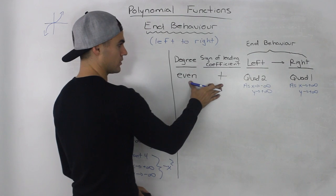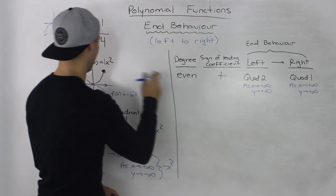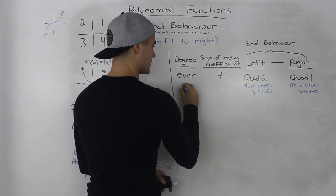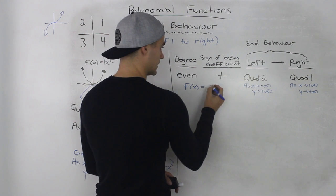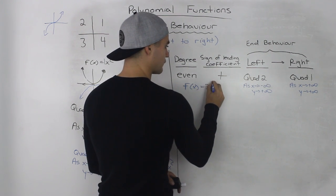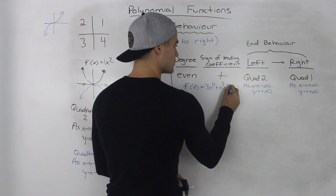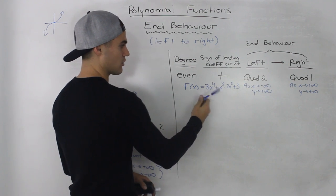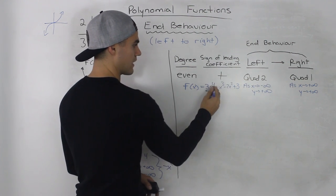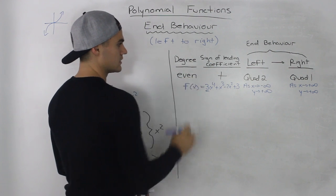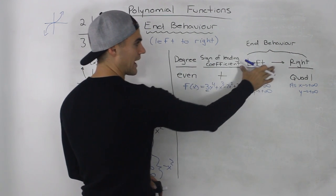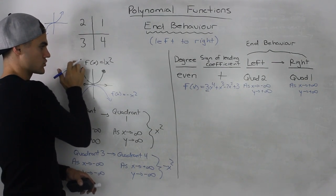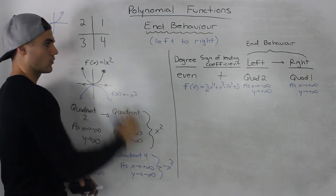A more complex example of a polynomial with an even degree and a positive leading coefficient would be something like 3x⁴ + x³ − 2x² + 3. The leading coefficient 3 is positive and the degree 4 is even. So we know that this polynomial function would have end behavior starting in quadrant 2 and ending in quadrant 1 when reading from left to right.